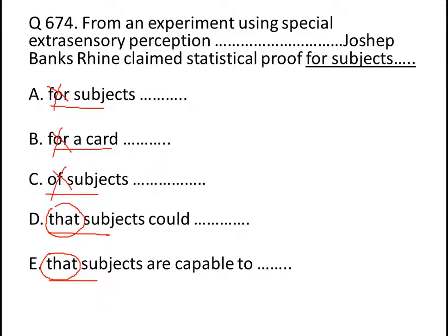Now if you look at option E, it is 'capable to'. 'Capable to' is a wrong idiom — 'capable of' is the correct idiom. So eliminate option E. Hence D is the correct answer. Thank you.